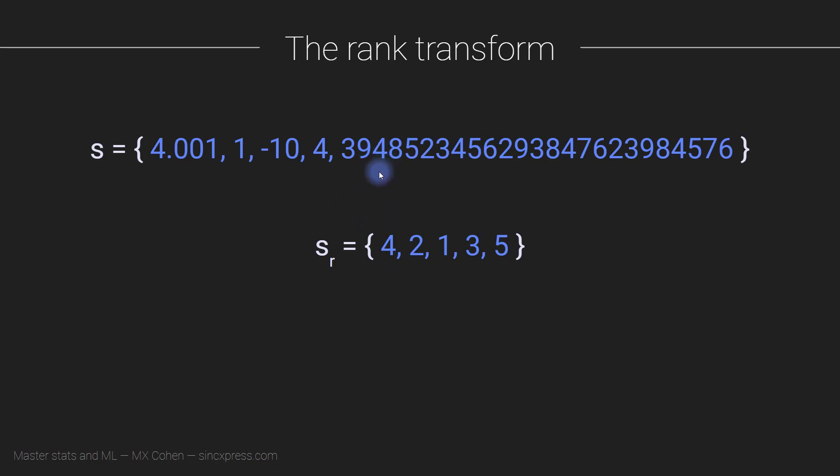It looks kind of weird at first if you're not familiar with rank transform. It kind of looks like we just rounded this first number, but then somehow the 1 turned into a 2, minus 10 turned into a 1, the 4 dropped down to 3, and this gigantic number just became a 5. So what is actually going on here?